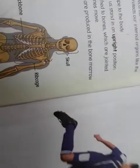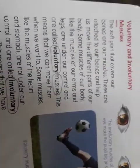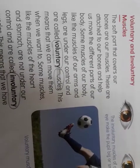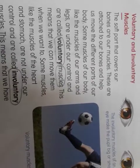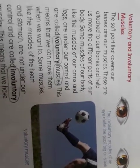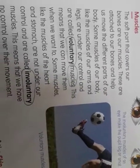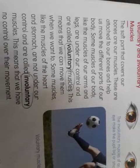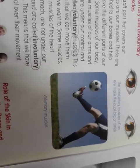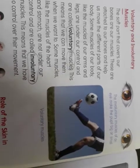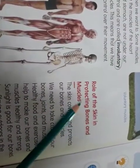Next lesson is voluntary and involuntary muscles. Muscles that are under our control are called voluntary muscles — like the muscles of our arms and legs. Involuntary muscles are those muscles that are not in our control.